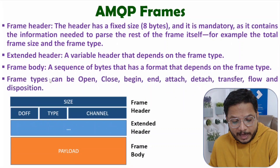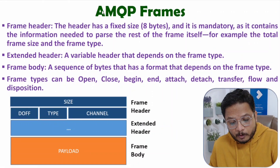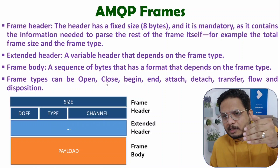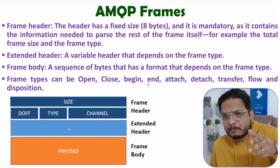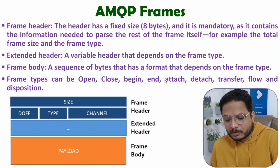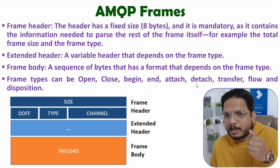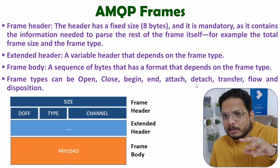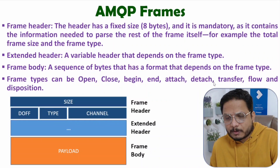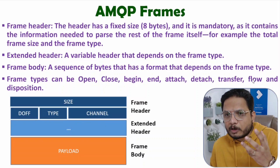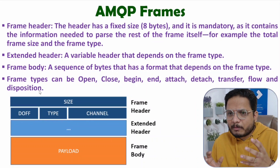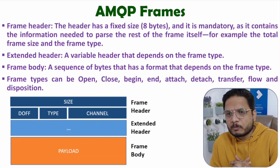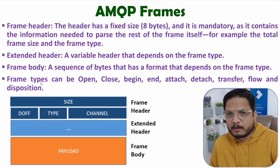There are various frame types available with AMQP protocol: open and close frames for opening and terminating a connection; begin and end for starting and ending a connection; attach and detach for establishing and terminating a link between two nodes; transfer for transferring data; flow for flow control defining the rate at which data is forwarded; and disposition frames for defining parameters like data rate, frame size, and how data should be forwarded.